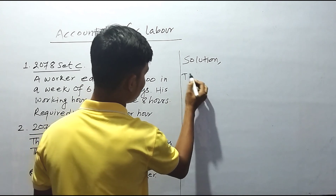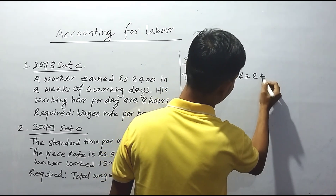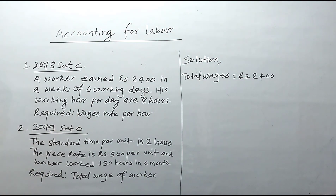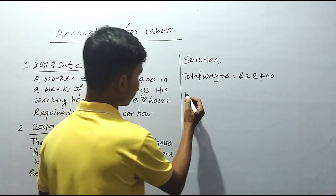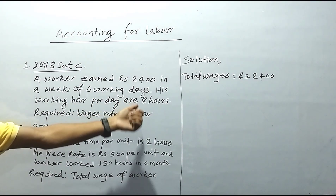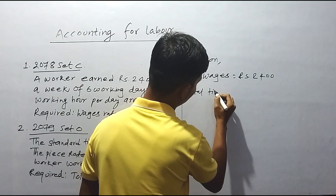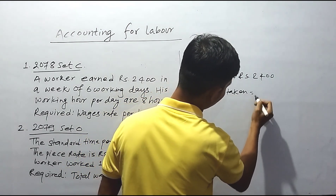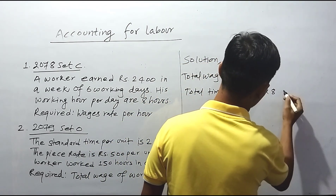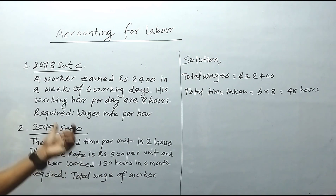So this is the solution. Total wages, total earning equation. We have a worker with six working days. One day equals eight hours, so six days total time taken is 6 times 8, equal to 48 hours.